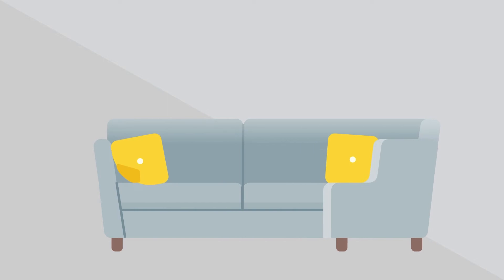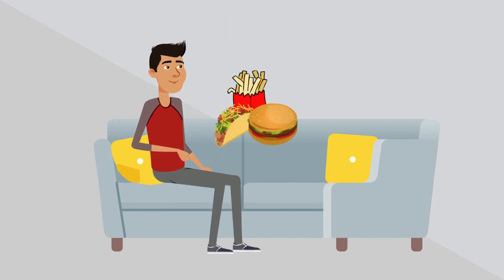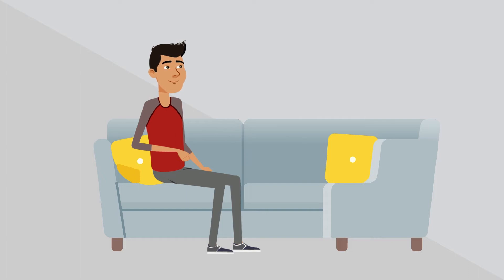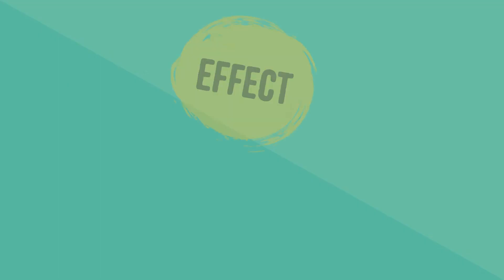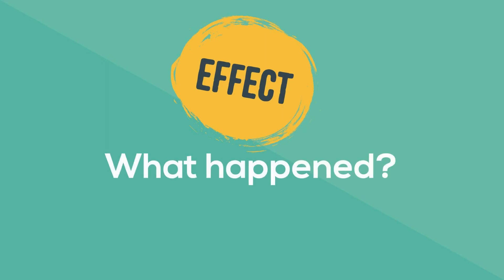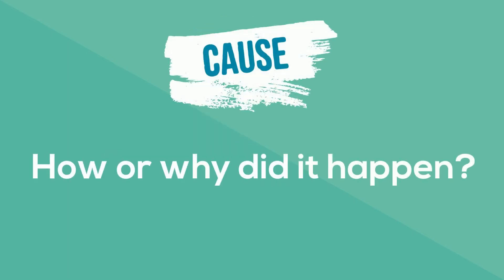An example of a cause is if you spend a week lounging around munching on junk food all day. The effect is that you'd gain a couple pounds. An effect answers the question, "What happened?" A cause answers the question, "How or why did it happen?"